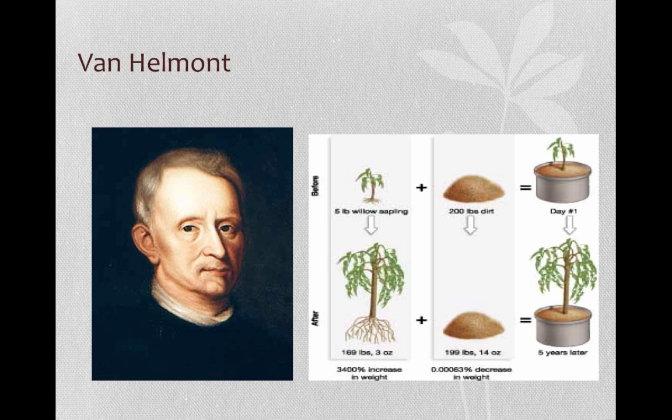Aristotle said plants derived their sustenance from soil. Van Helmont disputed that because plants in a pot don't use up their soil. This is where he did his famous experiment. He planted a five-pound willow sapling in 200 pounds of soil. He dried the soil and weighed it and then put it in a large pot. He covered the soil to prevent dust from getting in and watered it as needed. After five years, he weighed the soil and the tree. The tree went from five pounds to 169 pounds, and the soil only lost two ounces.